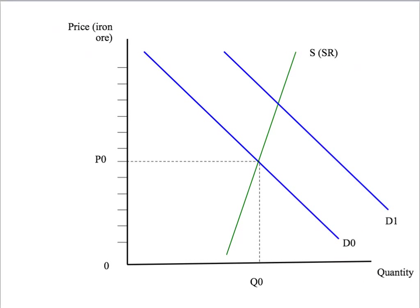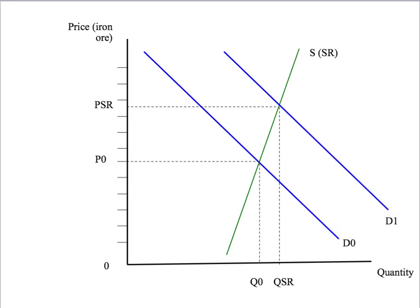Then in 2004, growth in the Chinese economy shifts the demand for iron ore out to the right — it goes from demand curve D0 to demand curve D1. The short-run effect is a big increase in price and a relatively small change in the quantity of iron ore traded. Why? Well, that reflects that our short-run supply curve for iron ore is pretty steep.